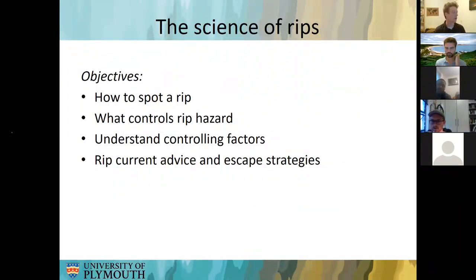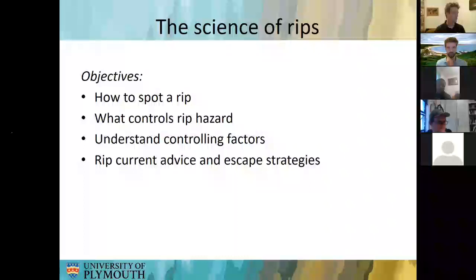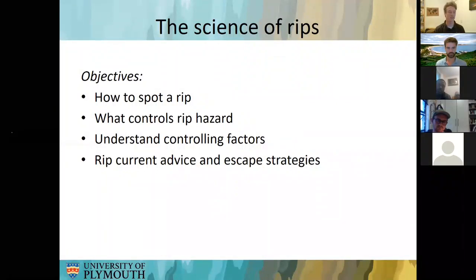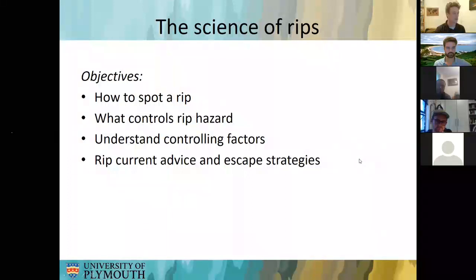So the objectives of this part of the talk: first of all, we're going to talk about what rips look like and ways to spot rip currents. That might be really obvious to some of you, but for others it's more difficult — they are very complex things, so it's not always obvious how to spot one. We're going to talk about what controls the hazard posed by rips — when are they more dangerous and when are they less. We're going to talk about the controlling factors: waves, tides, and beach morphology. Then we'll talk about the global rip current advice and escape strategies — how to actually get out of rip currents — which is probably the sort of advice you give to the public anyway, so it'll be interesting to compare notes.